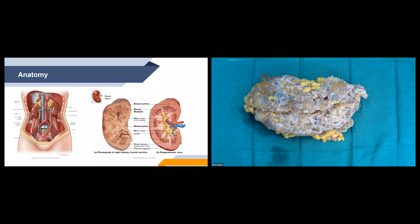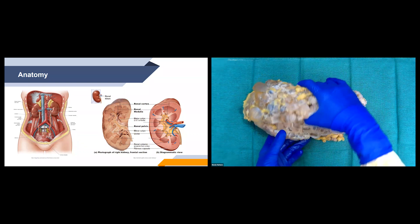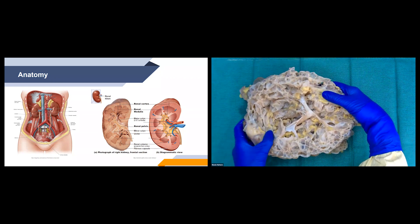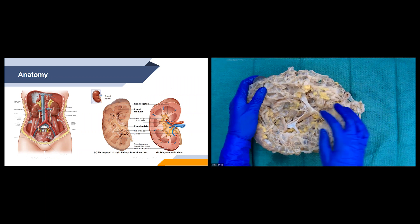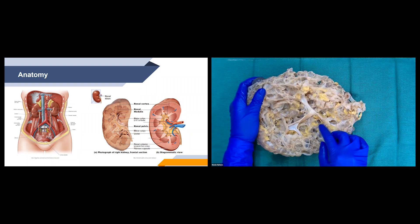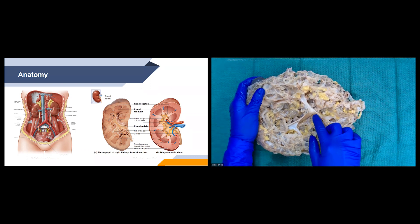Then urine drains into the minor calyx, then the major calyx, then the renal pelvis, and then into the ureter. It's important to differentiate between the renal pelvis and the renal sinus. The renal pelvis drains urine into the ureter, while the renal sinus is all of the fat surrounding the renal pelvis. For our specimen here, all of this fat you see around the renal pelvis is the renal sinus.